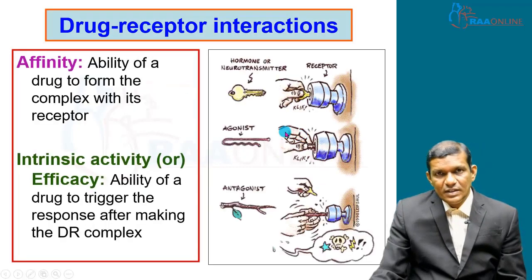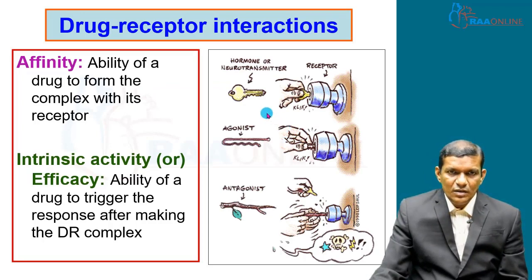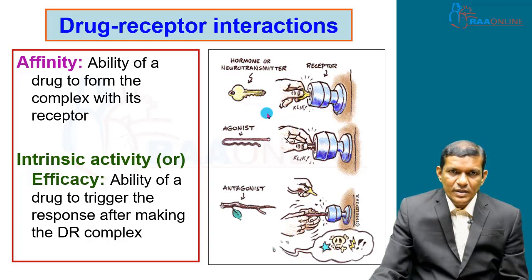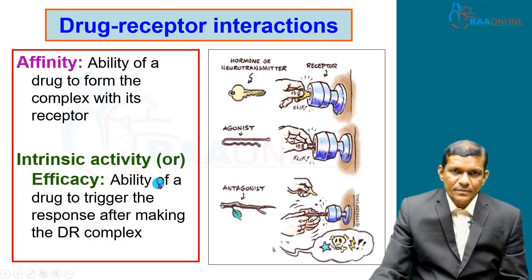For drug-receptor interactions, two important terms are involved: one is affinity, and the second is intrinsic activity or efficacy. These terms are very important for the drug to produce the therapeutic response. A few terminologies to be discussed include agonist, antagonist, and inverse agonist, and those are decided based on these two concepts.